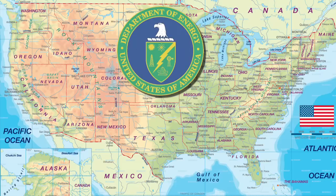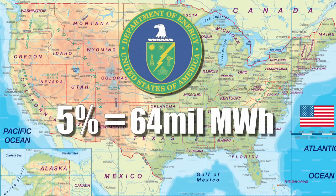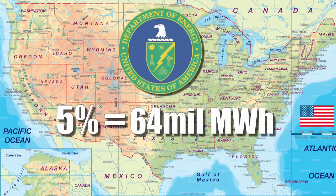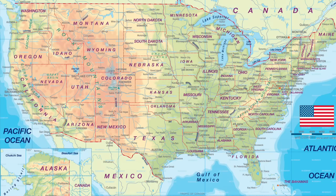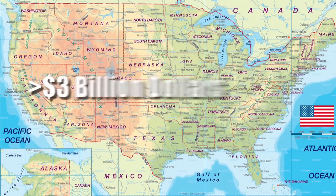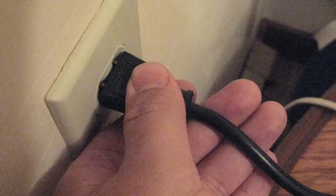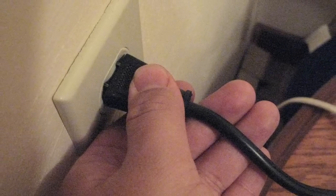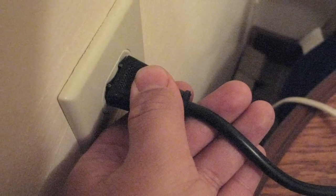According to the Department of Energy, that wasted 5% amounts to an annual energy loss of 64 million megawatt hours of electricity, which is equivalent to the output of 18 typical power stations and costs over $3 billion. If we could stop the use of phantom power, we could keep 100 billion pounds of CO2 out of the Earth's atmosphere each year.